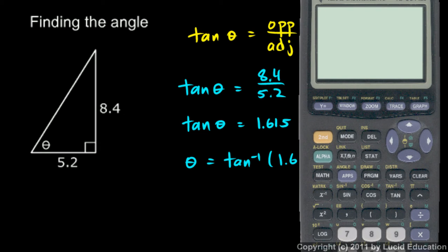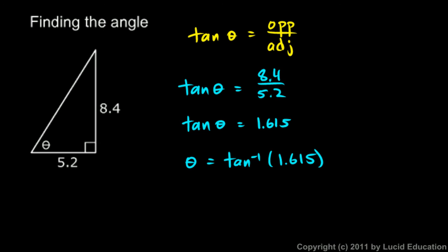We can do that on the calculator. Theta is going to be the inverse tangent of 1.615, so we pull up inverse tangent and type in 1.615, and that should give us the angle in degrees, and it comes out to 58.23 degrees. So that's our answer.